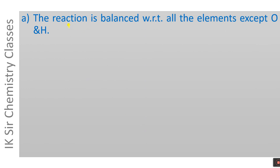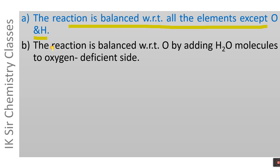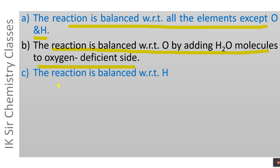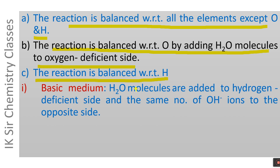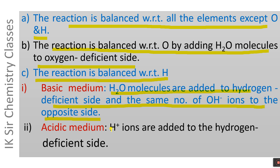First, the reaction is balanced with respect to all elements except oxygen and hydrogen. Then the reaction is balanced with respect to oxygen by adding H2O molecules to the oxygen-deficient side. Thereafter, the reaction is balanced with respect to hydrogen. In basic medium, H2O molecules are added to the hydrogen-deficient side and the same number of OH⁻ ions are added to the opposite side. In acidic medium, H⁺ ions are added to the hydrogen-deficient side.